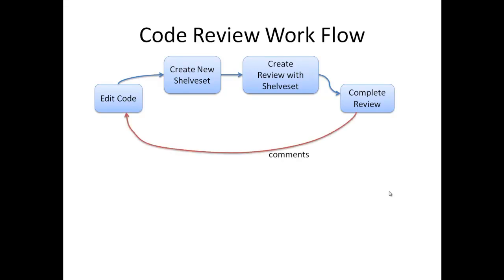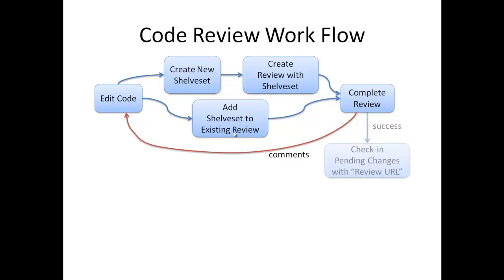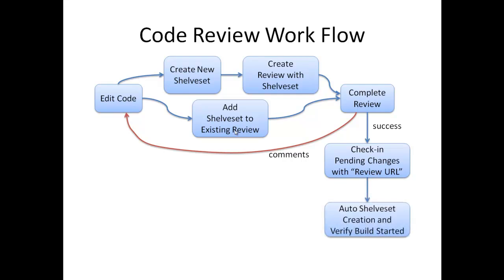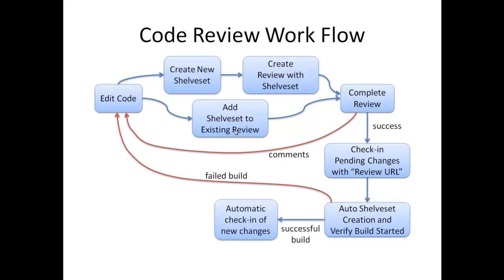Reviewers review the code and comment on the issues they find. If there are any issues identified, the developer updates the changes to fix the issues and creates a new shelf set. Developer then updates the existing review with the new shelf set and restarts the review. Once review is complete and there are no issues, developer checks in pending changes specifying the successfully completed review URL in the check-in notes. Gated check-in automatically shelves the new check-in and starts a new verification build. If the verification build fails, developer edits the code again and goes through the code review cycle again. If the verification build succeeds, TFS automatically checks in the pending changes on behalf of the developer. The edit cycle is now complete.